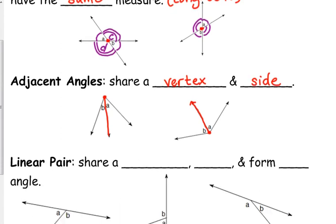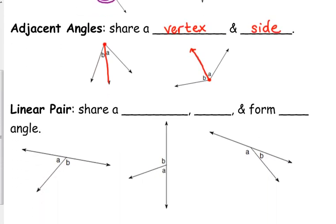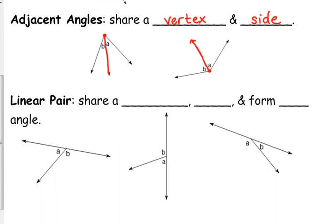Okay, now a specific example of adjacent angles are what we call a linear pair. So they share a vertex and a side, and because they are a linear pair, they form a 180 degree, or you may also see it referred to as a straight angle. So they share a vertex, they share a side, and together they form a 180 degree angle.